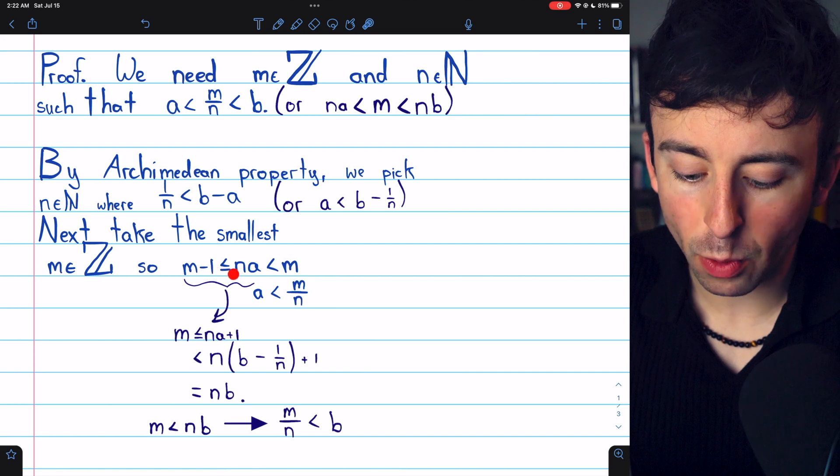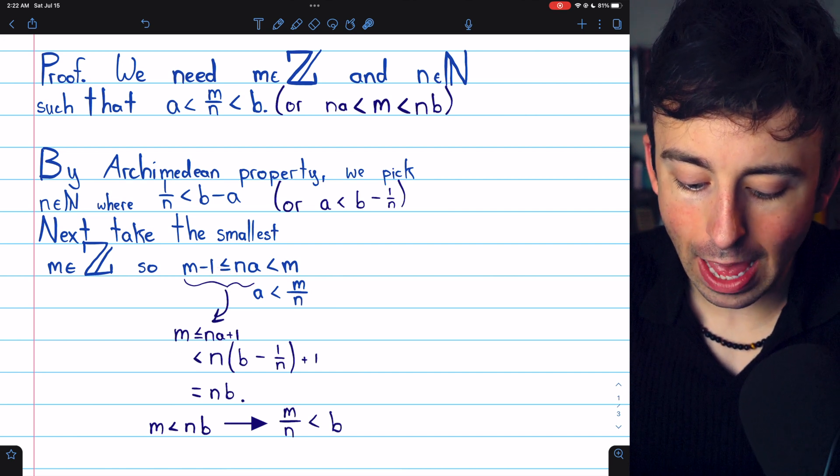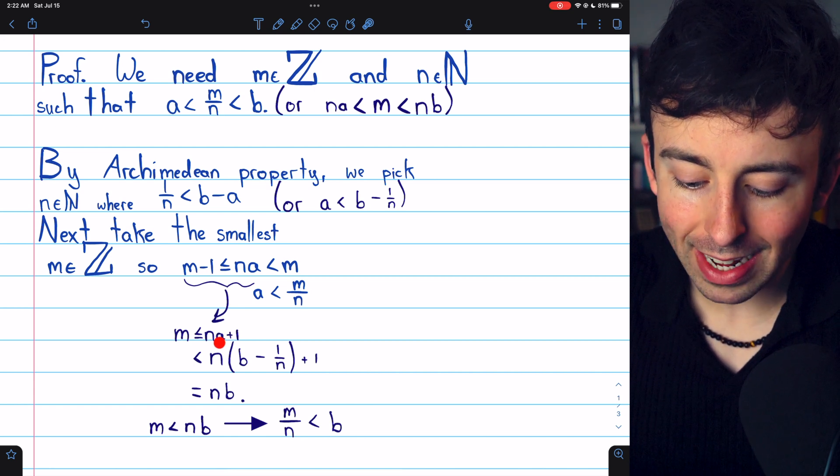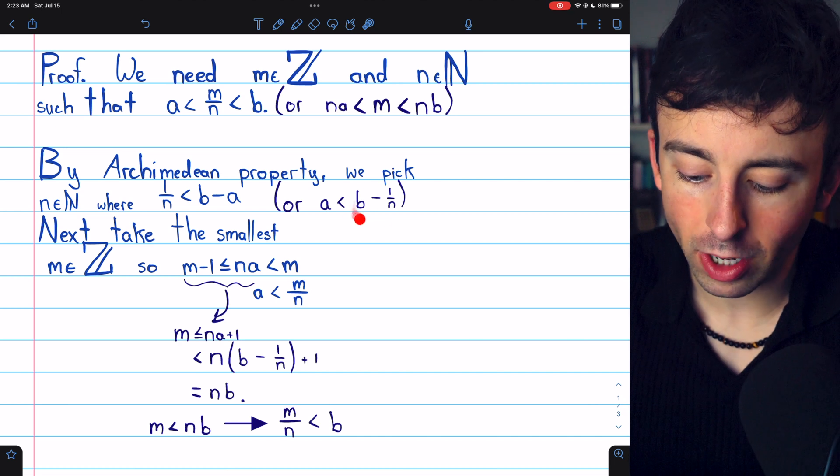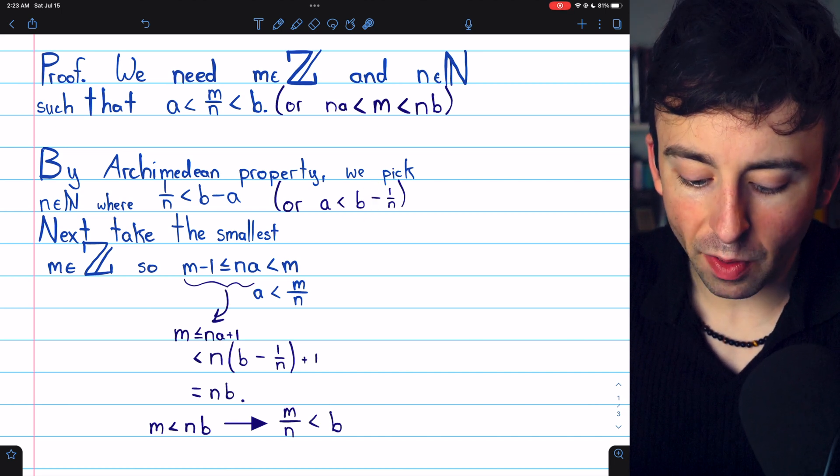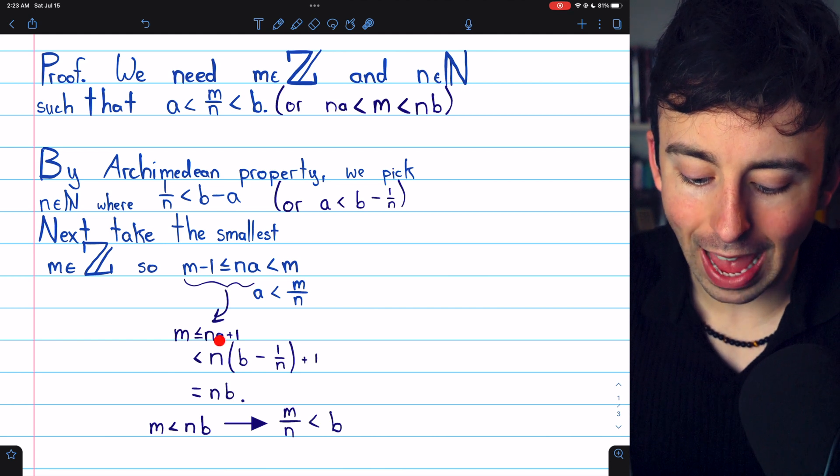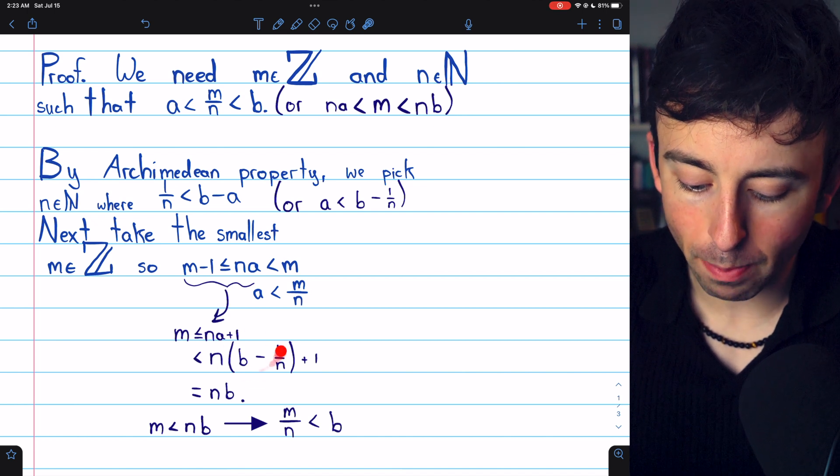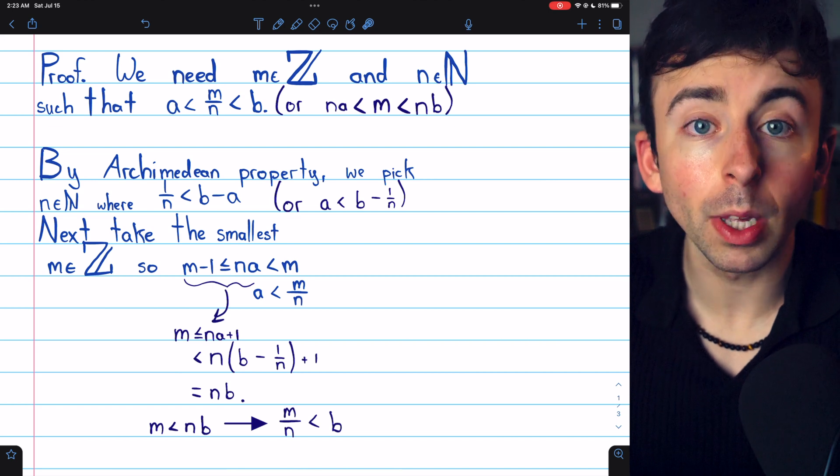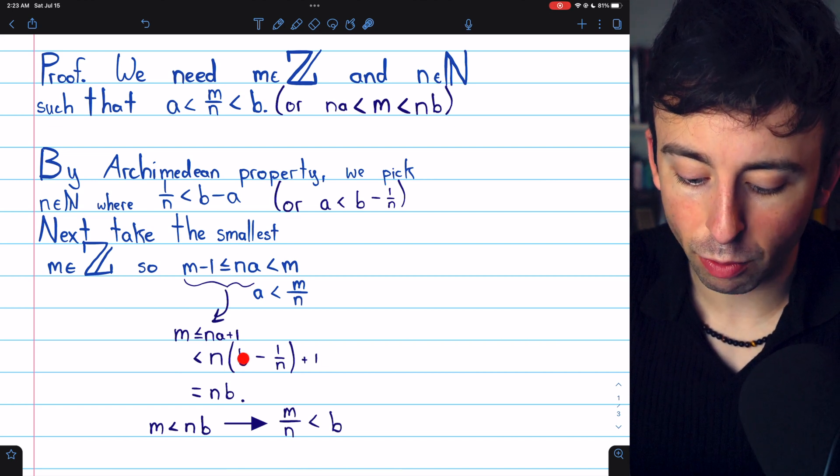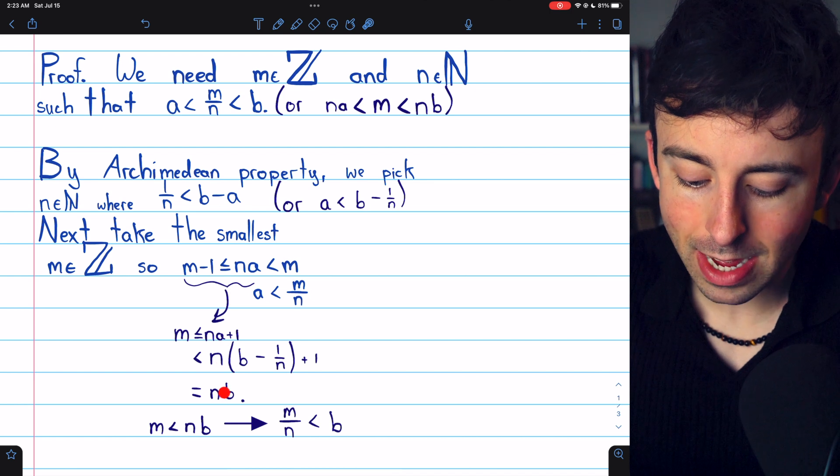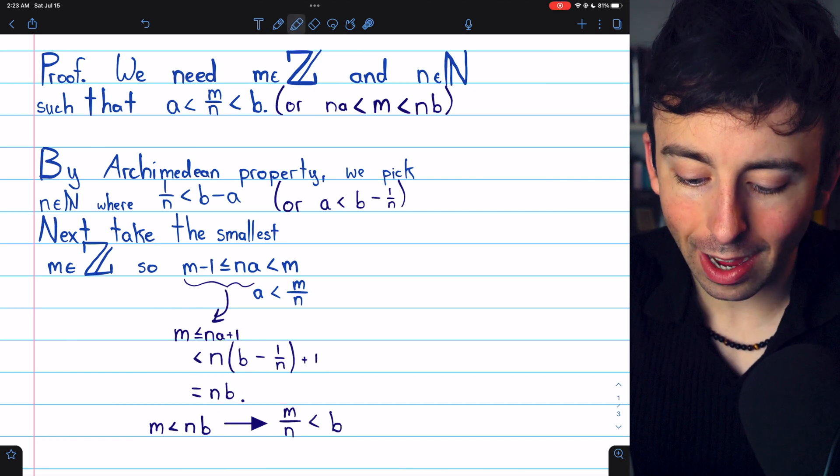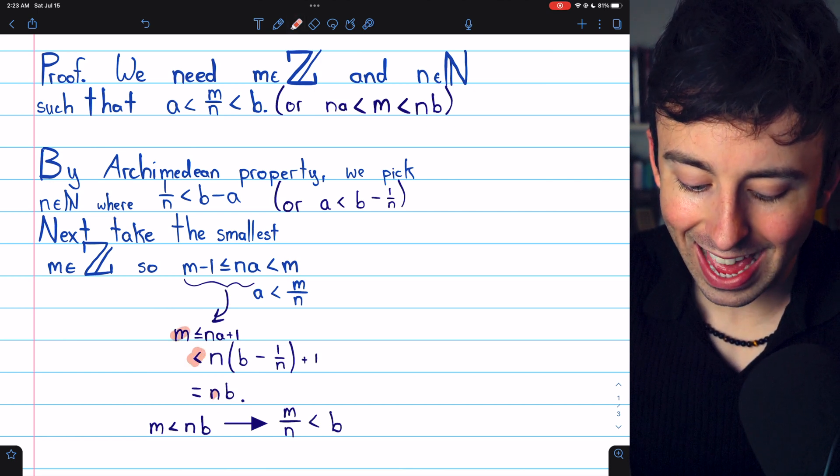On the left, M minus 1 being less than or equal to NA implies that M is less than or equal to NA plus 1. But then we can replace the A with this bigger expression, B minus 1 over N. If M is less than or equal to N times A plus 1, then it's strictly less than N times the bigger number, B minus 1 over N plus 1. But distributing the N through these parentheses gives us NB minus 1 plus 1, which is just NB.